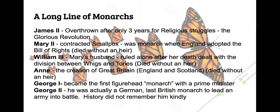They have a long line of monarchs, and I'm not going to talk in depth about each of them, but I did want you to know what was going on politically — so much matters to the context of what we're reading. James II was overthrown after only three years because of religious struggles. It was known as the Glorious Revolution, and it was glorious because it was without bloodshed. He was overthrown because he was Catholic and tried to reinstate Catholicism in England, and the people were having none of that.